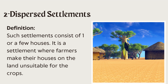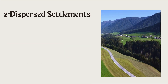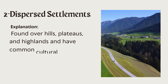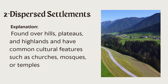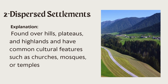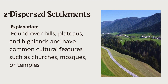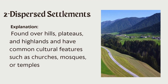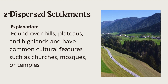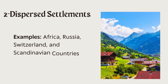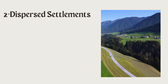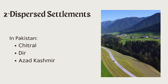Such types of dispersed settlements are found over hills, plateaus, and highlands. In these settlements, some cultural features are common, like churches, mosques, and temples. Such settlements are found in Africa, Russia, Switzerland, and Scandinavian countries.